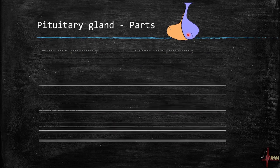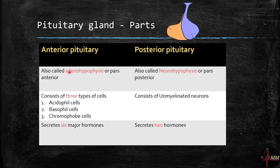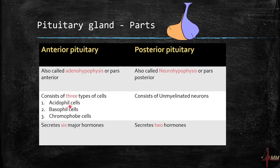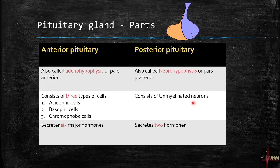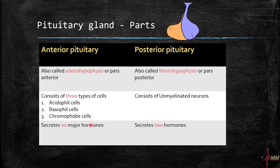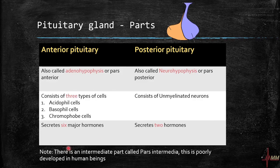The anterior pituitary is also called adenohypophysis or pars anterior, and the posterior pituitary is also called neurohypophysis or pars posterior. The anterior pituitary consists of three types of cells: acidophil cells, basophil cells, and chromophobe cells — classified based on staining. The posterior pituitary consists of unmyelinated neurons. The anterior pituitary secretes six major hormones and the posterior pituitary secretes two important hormones.